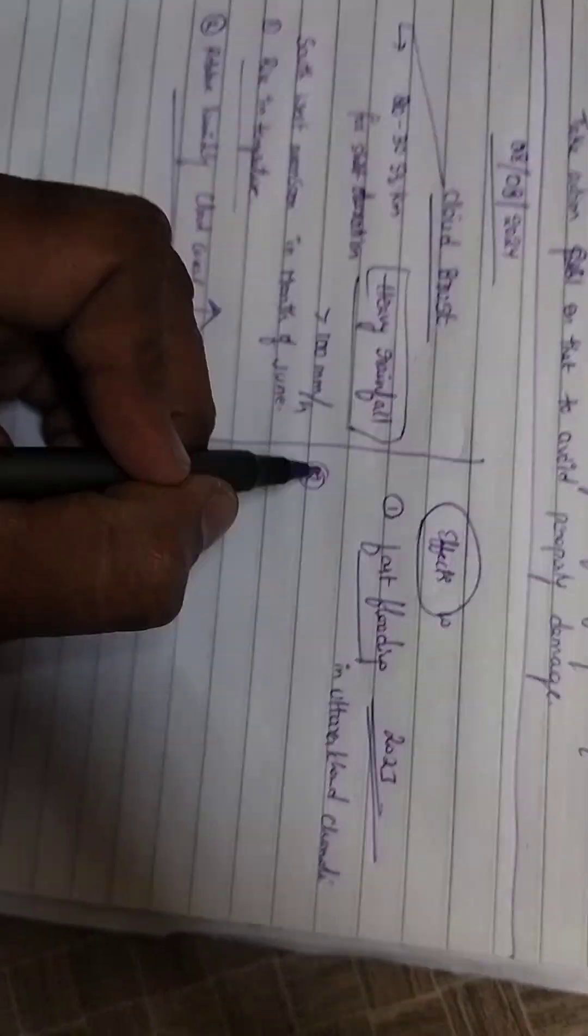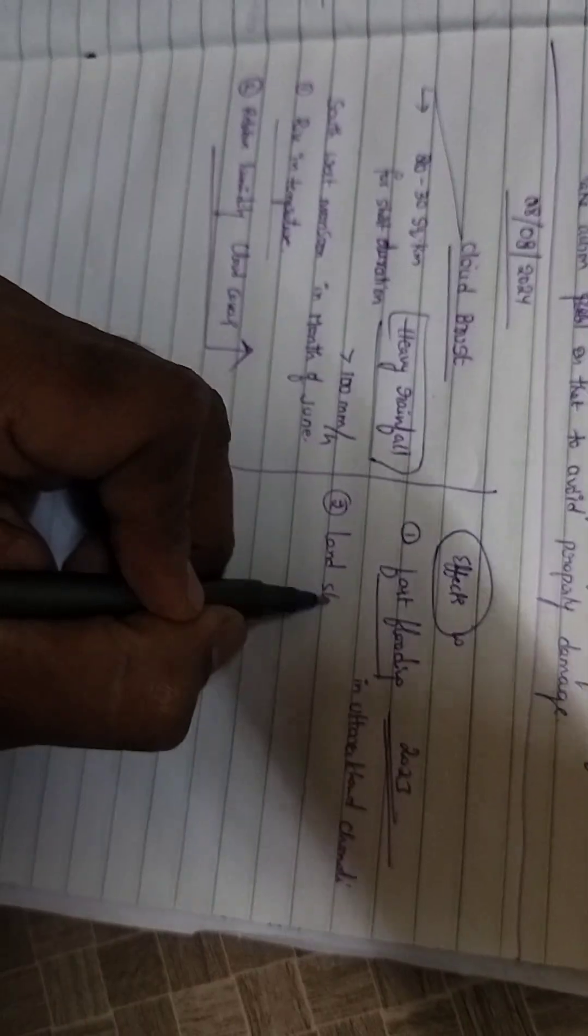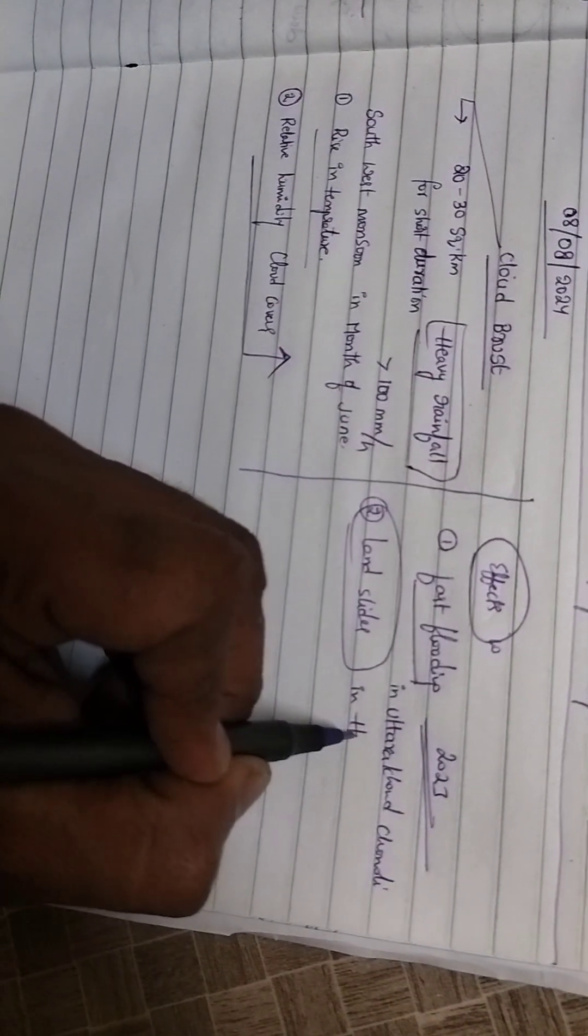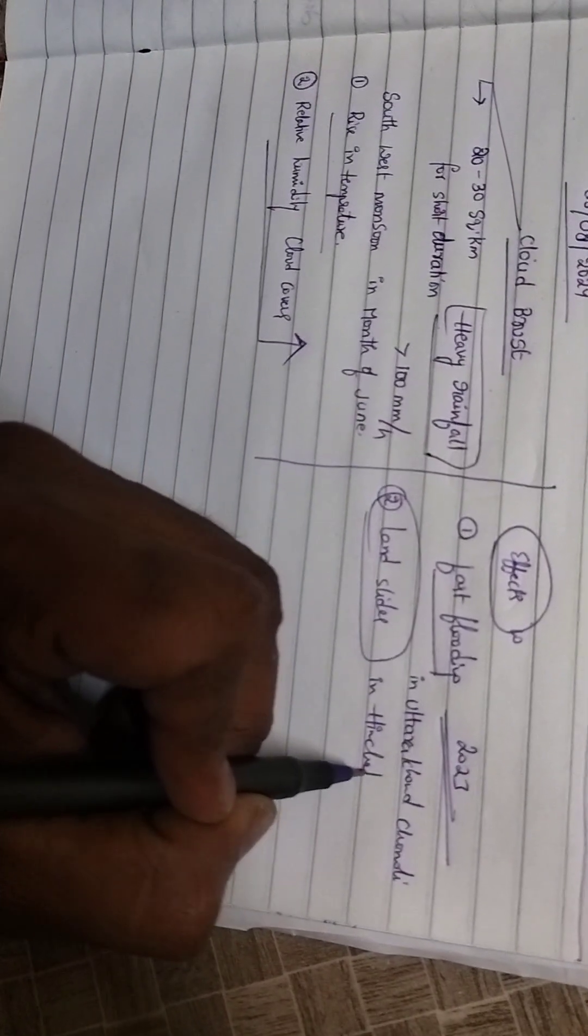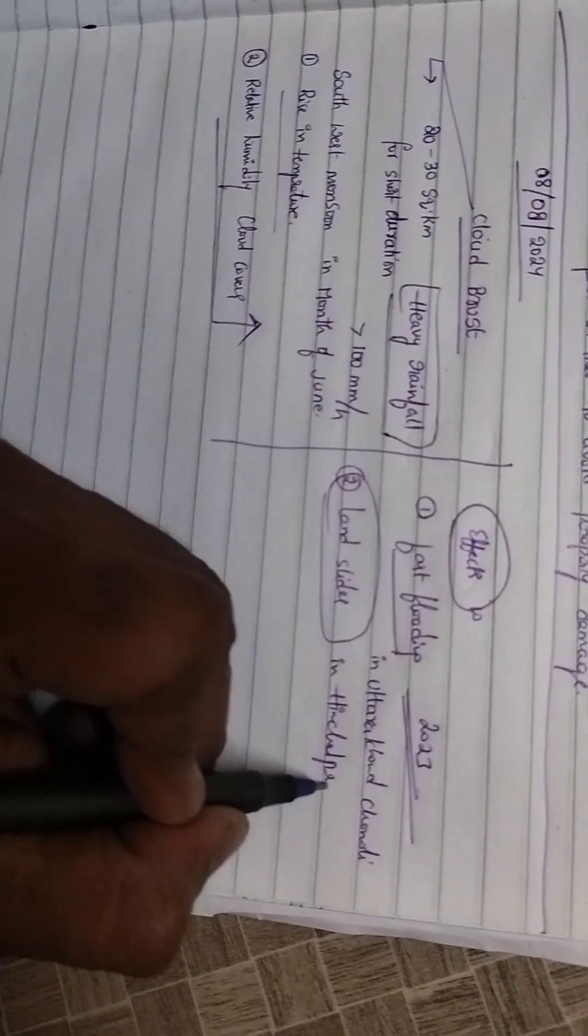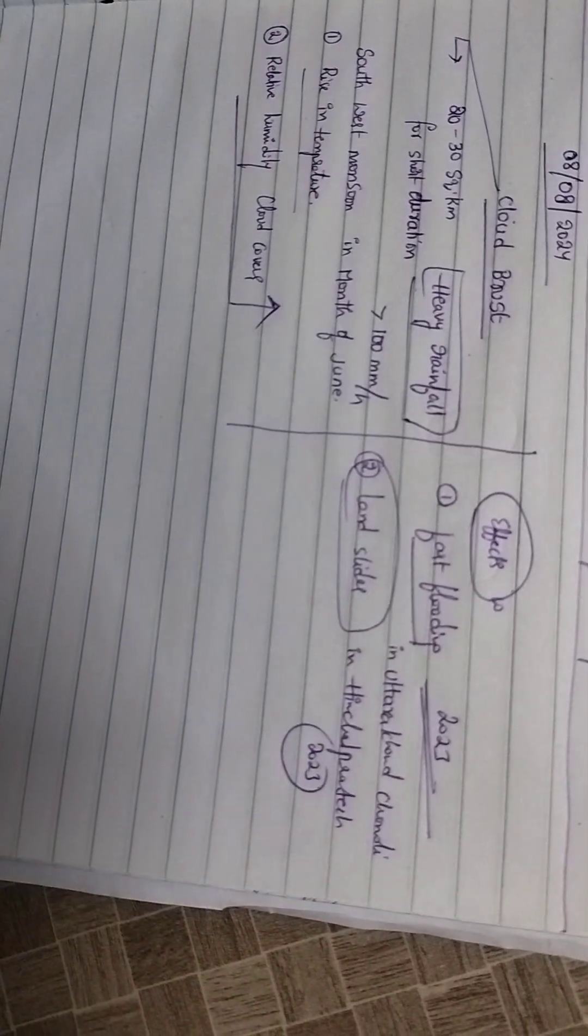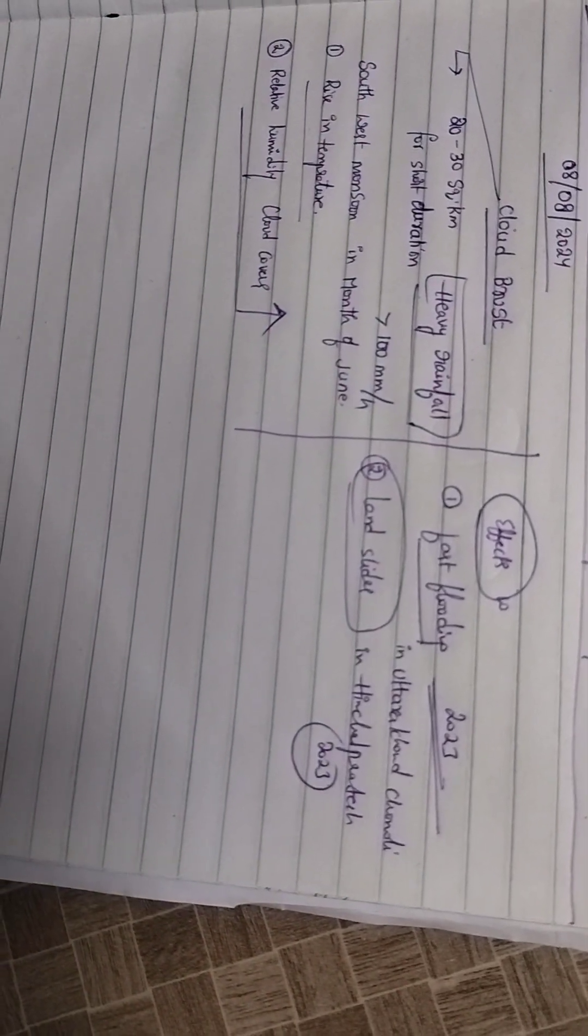And second one is landslides. In news also this came, this is in Himachal Pradesh. So many buildings were damaged in Himachal Pradesh in 2023. So many buildings collapsed and people died.